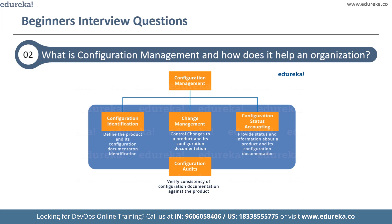To understand this better, consider the example of the New York Stock Exchange. They encountered a software glitch preventing stock trading for approximately 90 minutes after new software was installed on eight of their 20 trading terminals and failed to operate properly. By using configuration management tools such as Ansible and Puppet, they reverted back to the old software. Without configuration management, it would have taken much longer to fix, leading to a much bigger loss.